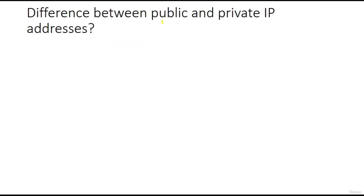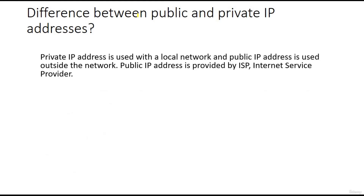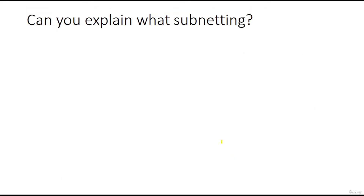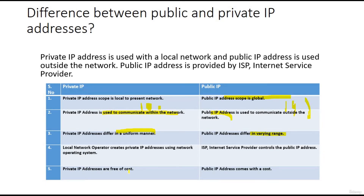What is the difference between public and private IP addresses? Private IPs are used within a local network while public IPs are used outside the network. Private IP is local; public IP is global. For example, 10.x.x.x is a private IP, while something like 197.65.2.x is a public IP. Private IP addresses differ in a uniform manner; public IPs differ across a varying range. Private IPs are free of cost, whereas public IPs come with a cost, assigned by IANA.